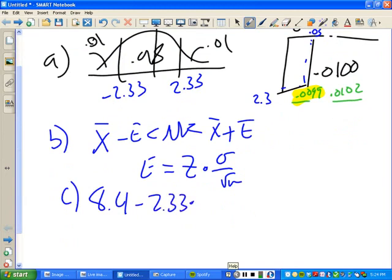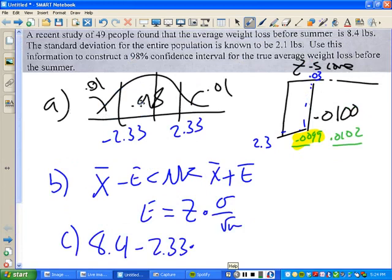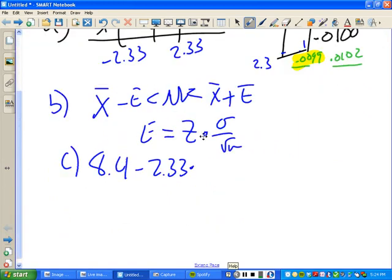8.4 minus 2.33 times, our standard deviation was what? 2.1 over the square root of 49. It's less than mu, which is less than 8.4 plus 2.33 times 2.1 over the square root of 49.